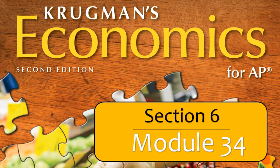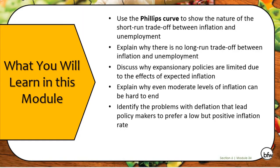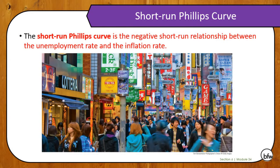This is the lecture for module 34. In this module we're going to take a look at something called the Phillips Curve — the second to last graph you'll learn in this class. We'll talk about both the short run and the long run Phillips curve. The short run Phillips curve is the negative short run relationship between the unemployment rate and the inflation rate. When unemployment goes up during recession, inflation goes down; during expansion when unemployment goes down, inflation goes up. The Phillips curve is simply a graph that shows this.